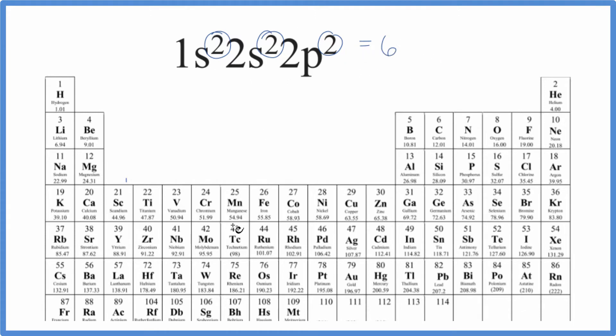All these elements on the periodic table, they're neutral. That means their electrons and protons are the same. So we can find the element with six protons, it'll have six electrons, and this will be our electron configuration.